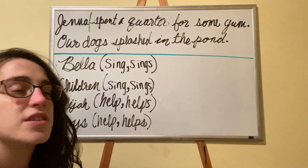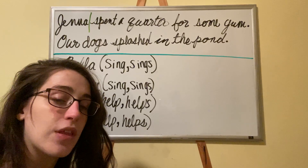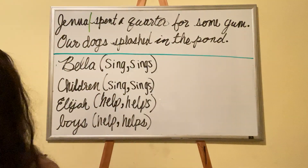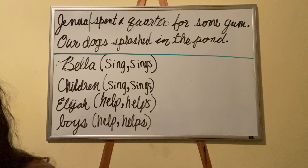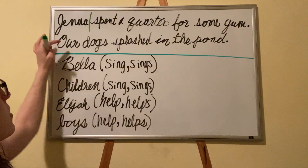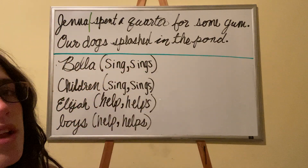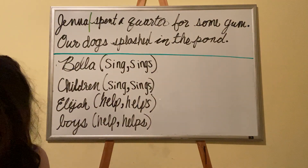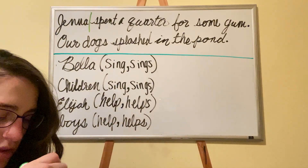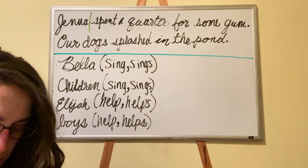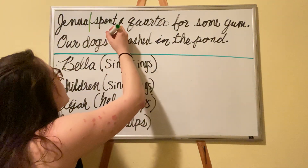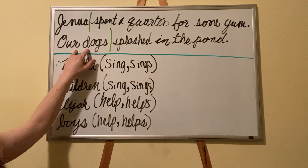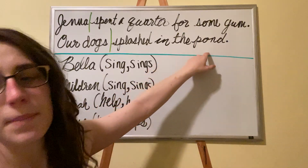Between Jenna and spent. Remember, the subject is the who or what is doing the thing in the sentence, and the predicate is what is happening — what's the thing that's going on. How about in our second sentence? Our dogs splashed in the pond. Where are you going to separate the subject from the predicate? Right here. Your complete subject is our dogs, and the complete predicate is splashed in the pond.